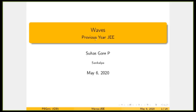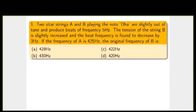Hello everyone, let us solve previous year JEE equations from the chapter Waves. Two sitar strings A and B playing the note Dha are slightly out of tune and produce beats of frequency 5 hertz. The tension of string B is slightly increased and the beat frequency is found to decrease. If the frequency of A is 425 hertz, the original frequency of B is?